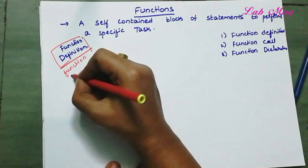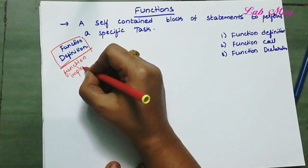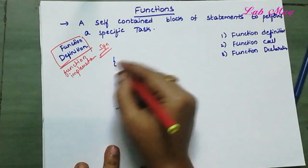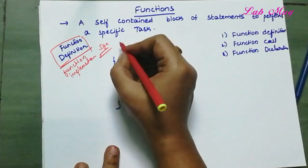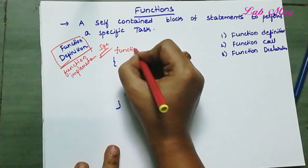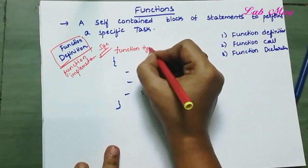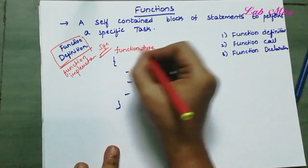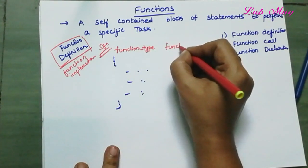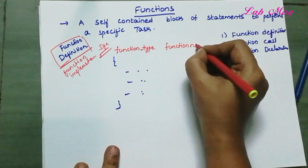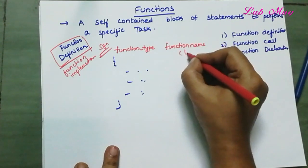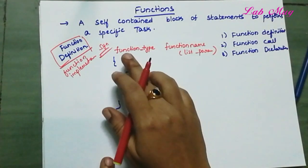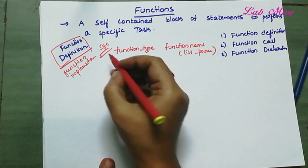So, how to declare a function — the syntax. First of all, we have function type. Function type space, then function name, then list of parameters. So the structure is: function type, function name, list of parameters.